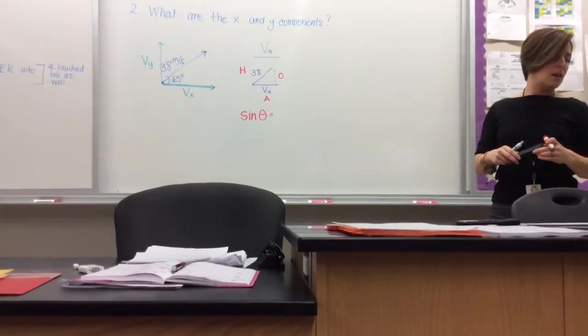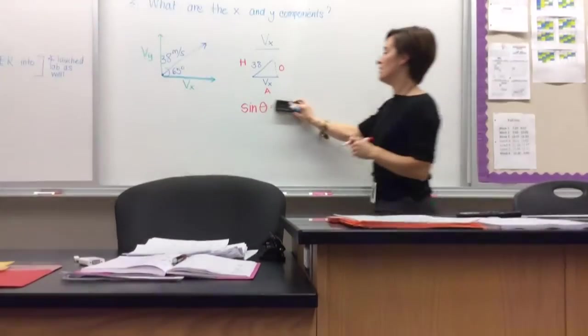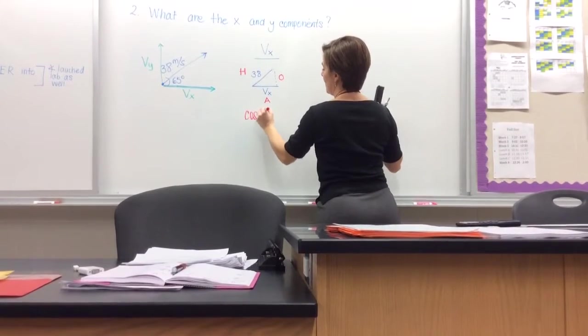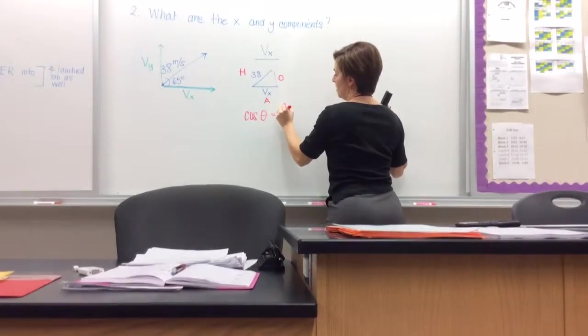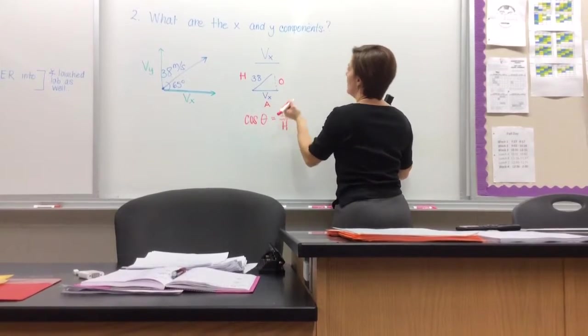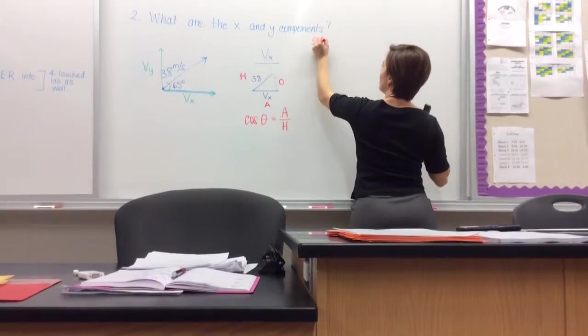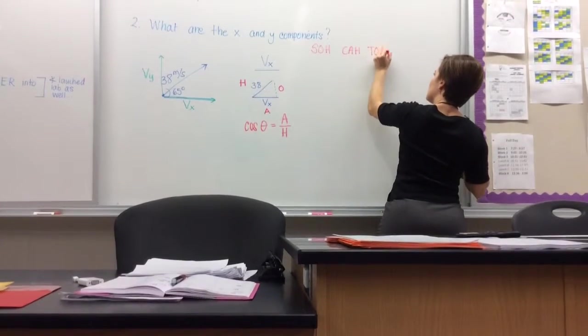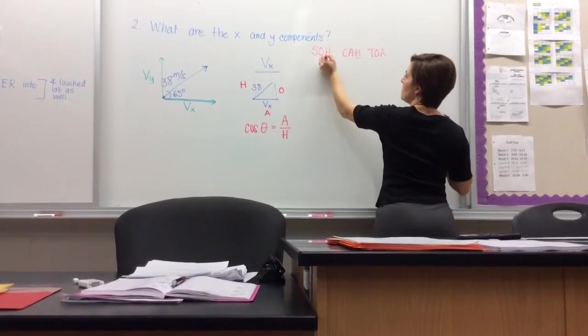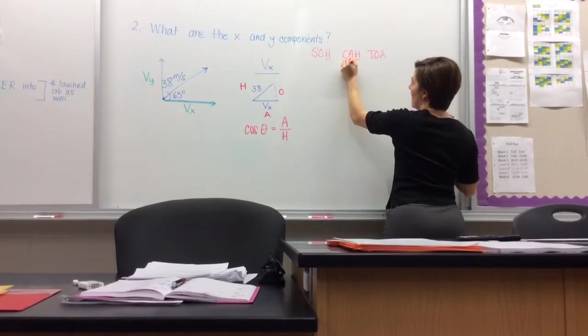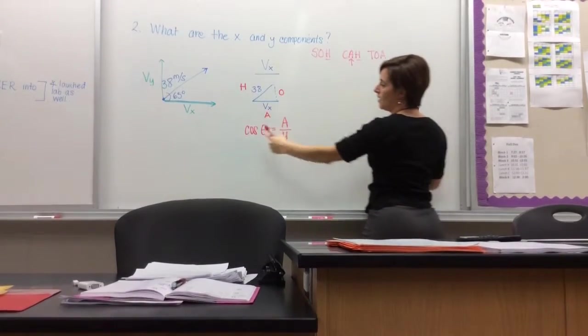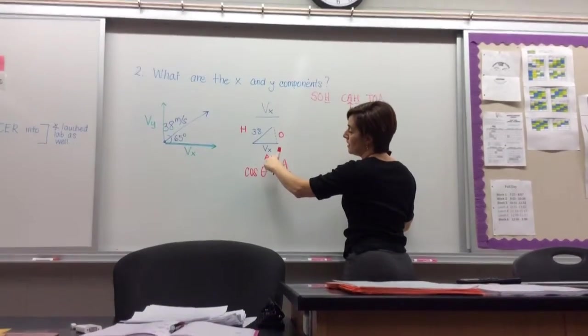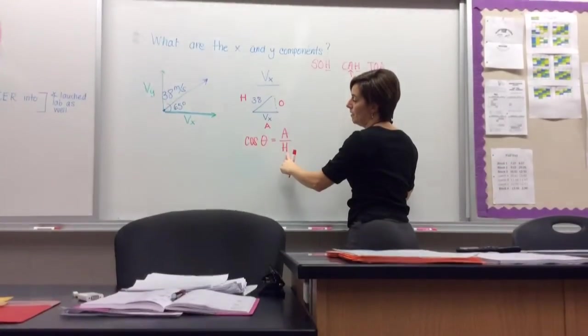Is it sine adjacent or hypotenuse? No, it's cosine adjacent hypotenuse, sorry. Cosine theta, adjacent all over hypotenuse. I'm dealing with hypotenuse. I want the adjacent side, so yes, I'm going to do cosine. Cosine of theta, or cosine of the angle, is equal to my adjacent side all over my hypotenuse side.